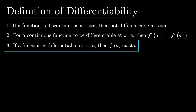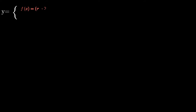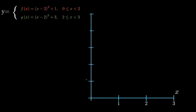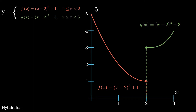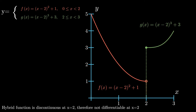First things first, here I've got a hybrid function — a quadratic in red and a cubic in green. We can see that this function is discontinuous because there is a gap at x equals 2. So at the point x equals 2, it is not continuous, therefore it is not differentiable at this particular point. We could investigate to see if this is differentiable if we made it continuous.